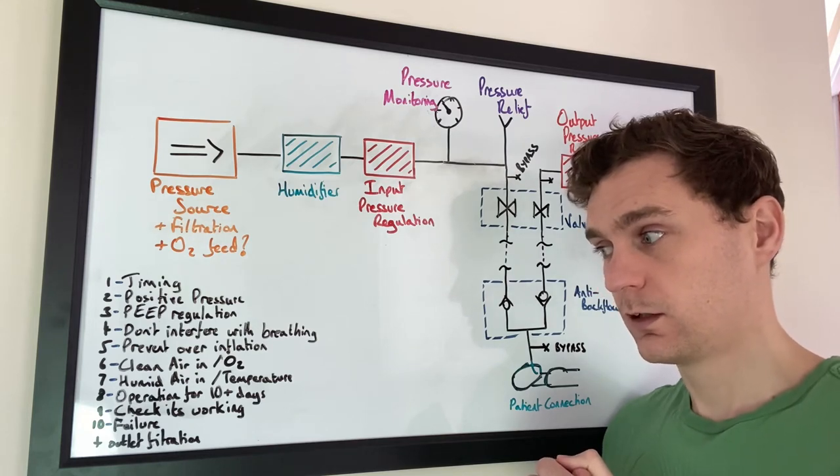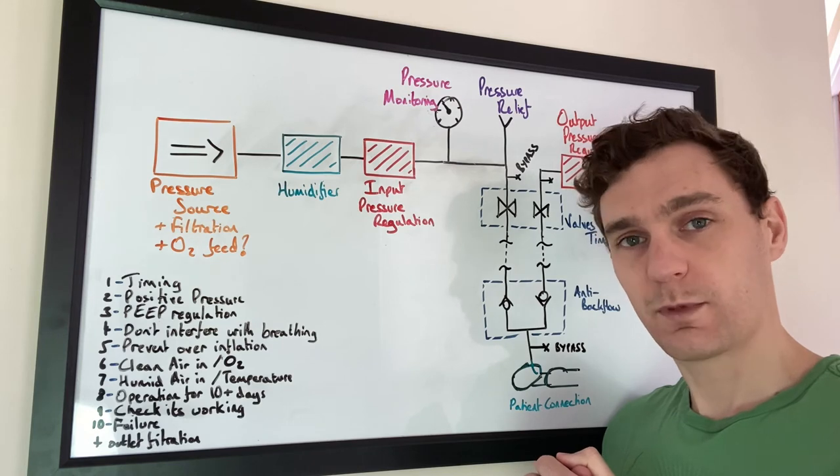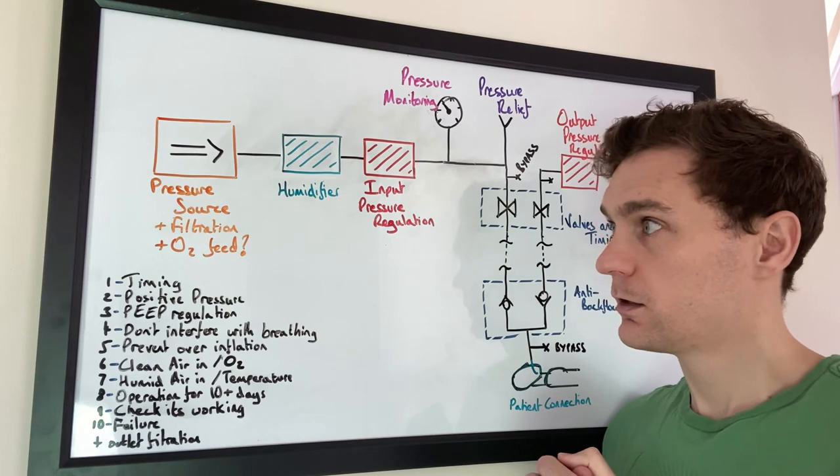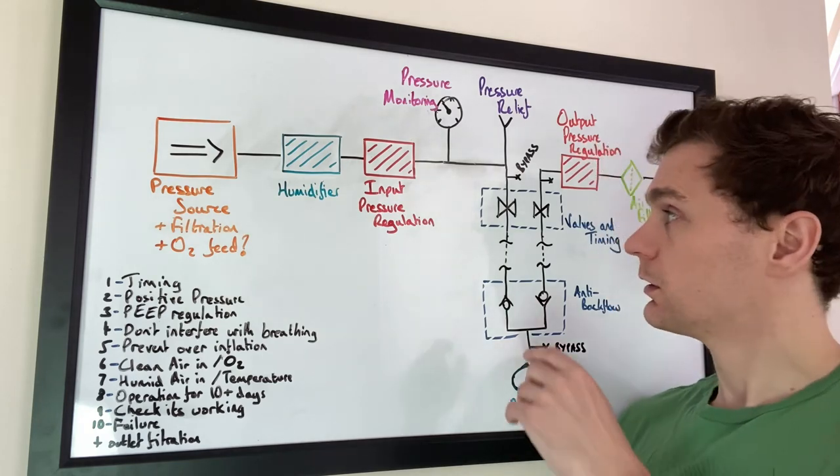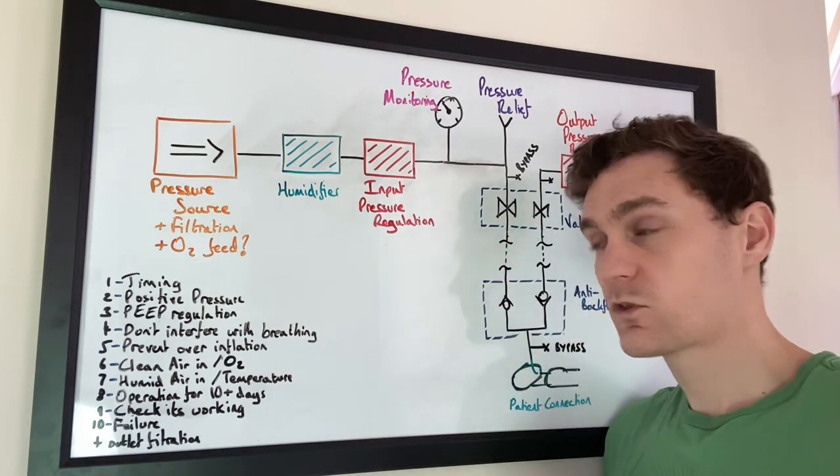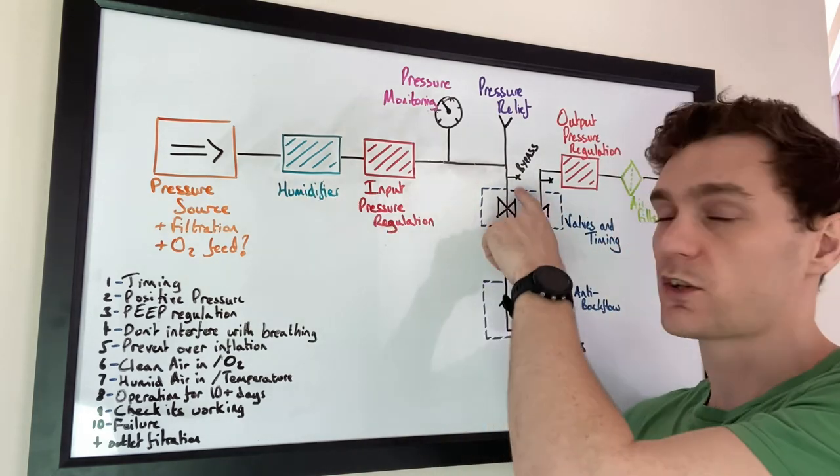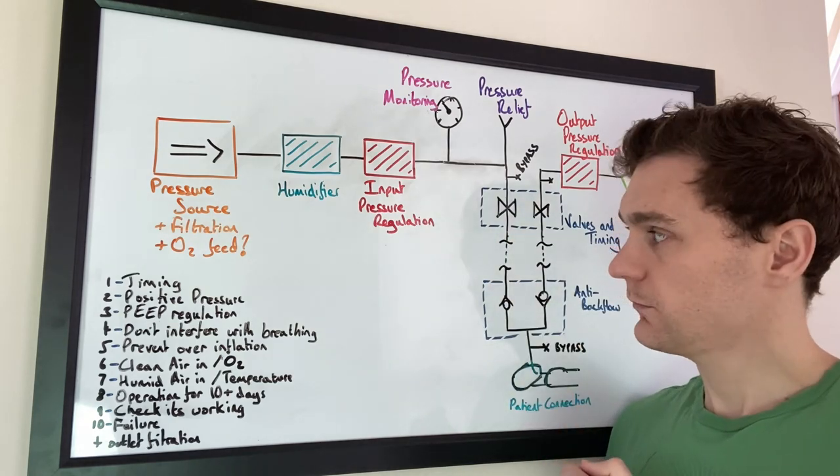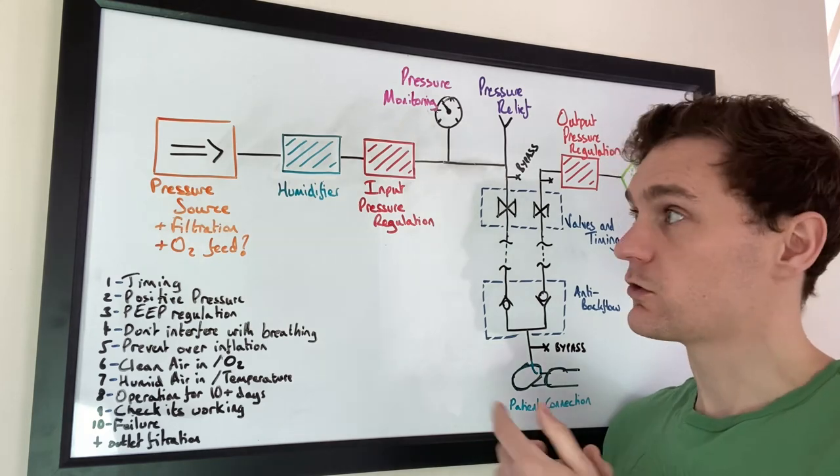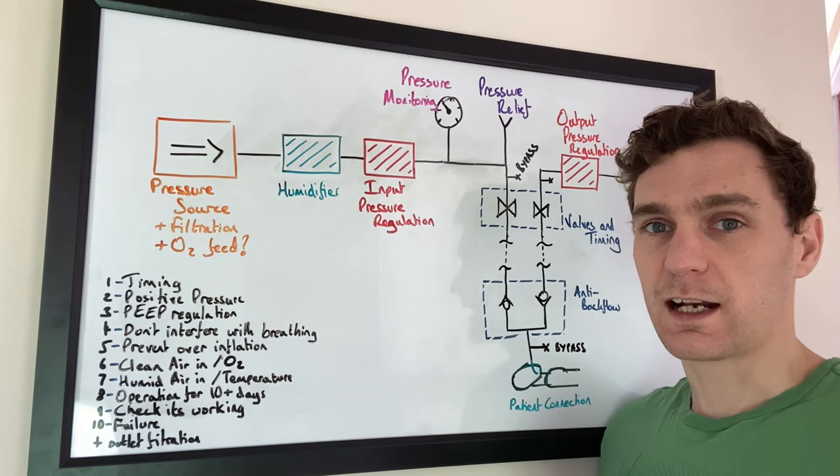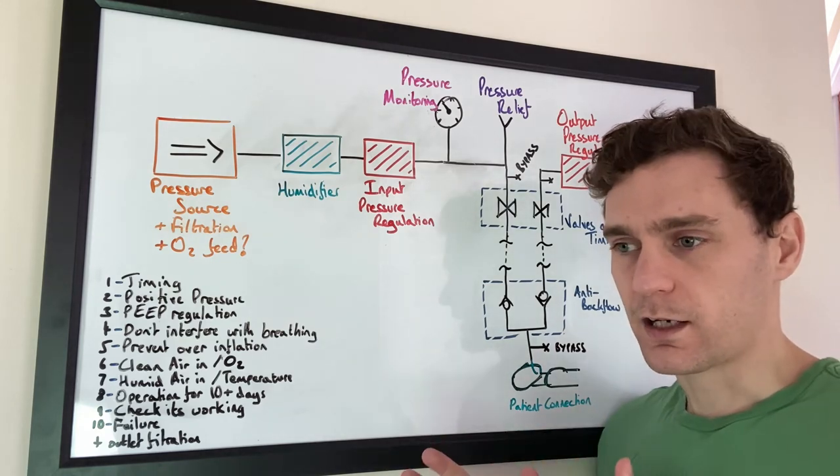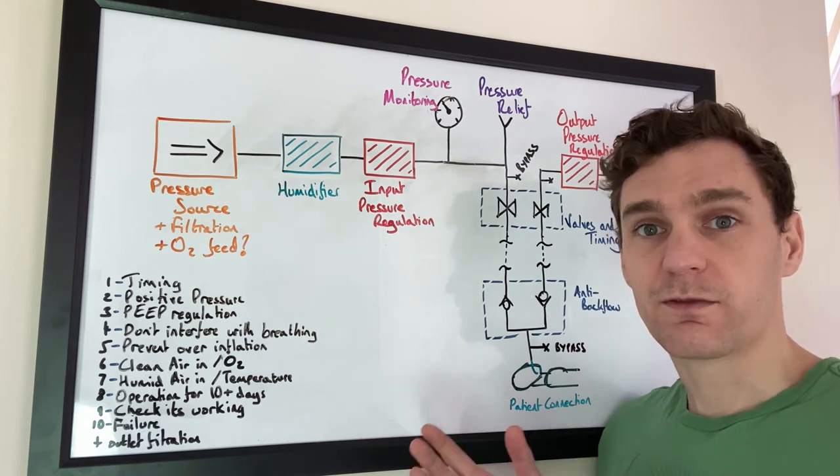Number 10, failure modes. What happens if something goes wrong and how do you make sure that you've considered that. I've described a few of those already on the system level. I have these bypass connections, so if anything goes wrong those bypass connections can be used. On an individual component level, you need to know what method you're using for each one of these blocks to be able to do an analysis of how it might fail and how you should replace those components, change that design in order to make it safer if it does fail.